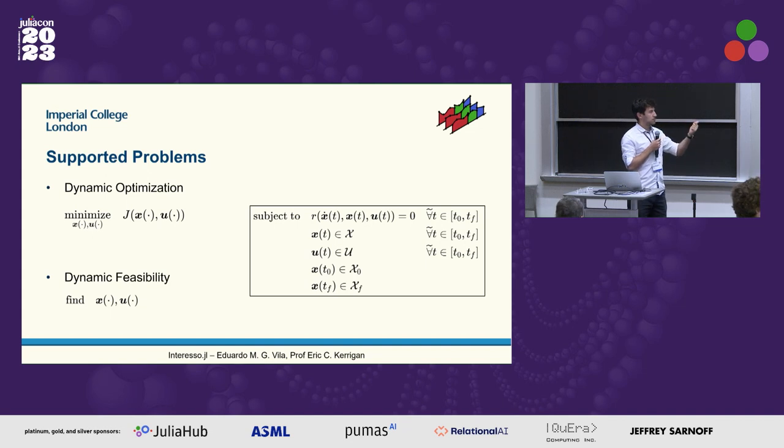In the case of feasibility, you just want to find states and inputs which are itself trajectories of time and then there are the dynamic constraints. This is where you put your ordinary or different algebraic equations in the residuals function. That function has to be equal to zero for all times in your time domain.